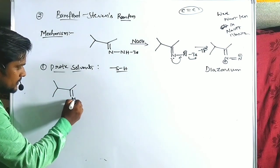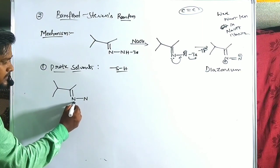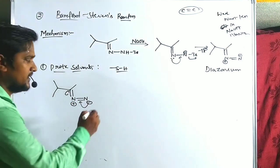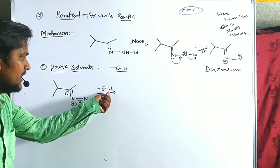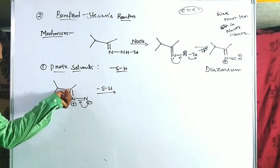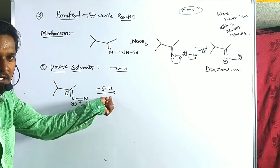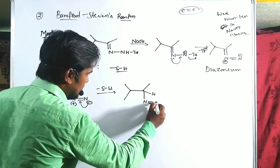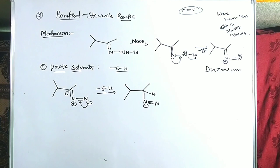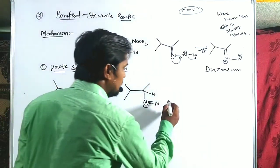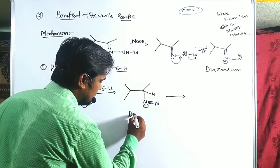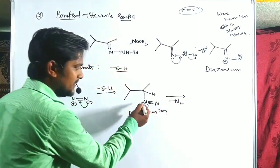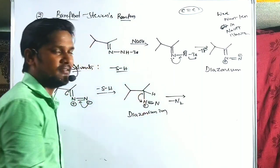In the presence of thiols (protic solvent), the diazonium compound undergoes tautomerism to form a carbanion (C⁻). The protic solvent donates H⁺ to this carbanion. A diazonium ion with N≡N⁺ is formed. Nitrogen is readily eliminated because it carries more than its valence, leaving as N₂ neutral molecule. The bonded electrons shift toward nitrogen; elimination of N₂ creates a carbocation.